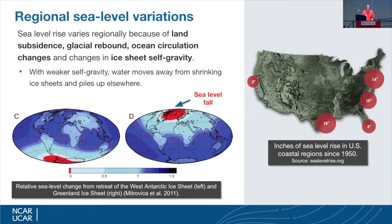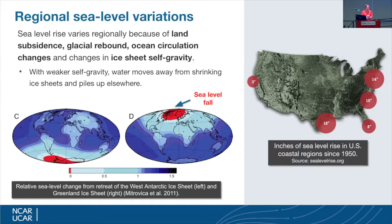I've given the numbers for global mean sea level rise, but sea level rise varies a lot over time and over space for different reasons. Locally, you may have land subsidence that contributes to sea level rise. Some places are still rebounding from the last glacial period, which tends to contribute to sea level fall. Also, as an ice sheet loses mass, it's less massive and therefore has less gravity. So one of the counterintuitive effects is that the red regions in the pictures on the left are where sea level is actually falling, because the ice sheets in those regions are no longer tugging on the surrounding ocean as much as they were.